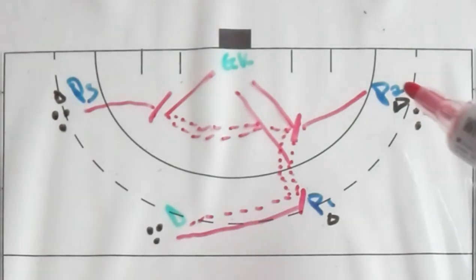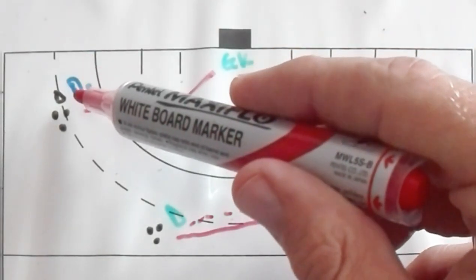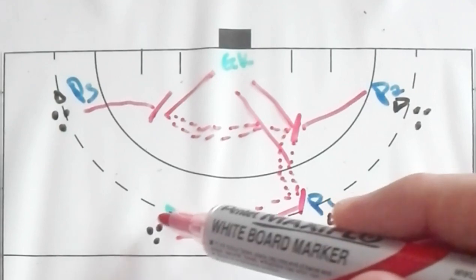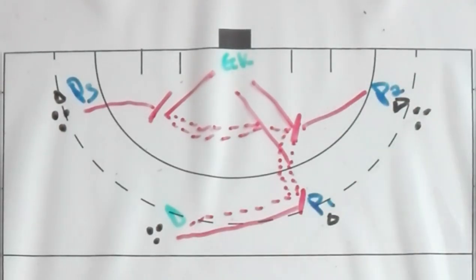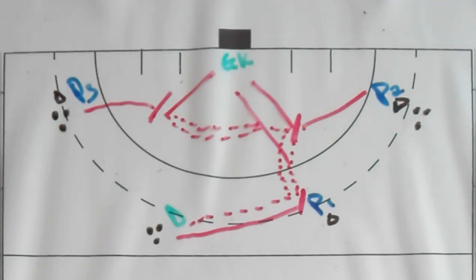How the rotations will work is player one will go to player three. Player three can become the defender. The defender can become the attacker, and then player one will go to player two, just so that everyone can have a good run around in this drill.